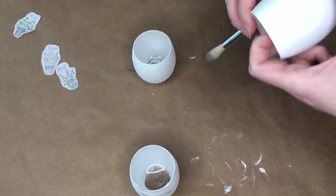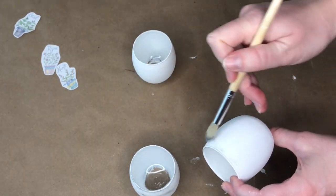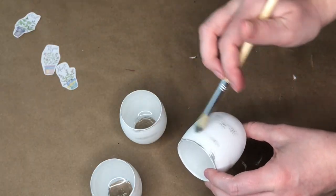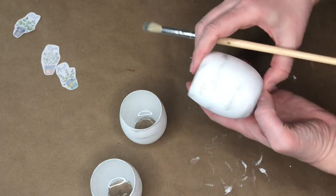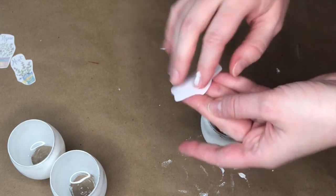Before adding any of the labels to the jars, I wanted the jars to have a distressed, almost galvanized, tin look to them. So, I took a dry brush and a bit of gray paint and just went all the way around the jars, creating these lines all around them to distress them.